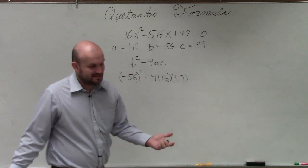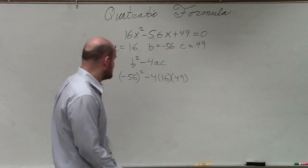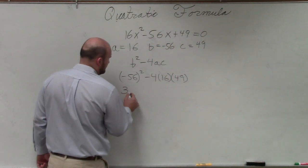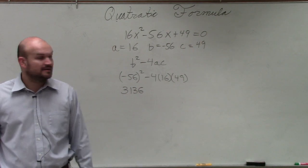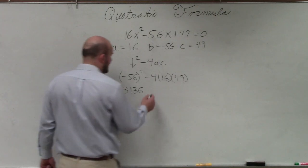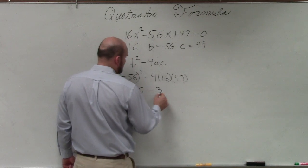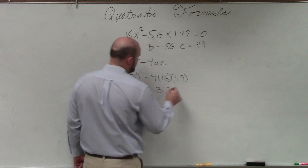So 56 squared, I typed it in my calculator, and I got 3,136. Then I did negative 4 times 16 times 49, and I got negative 3,136.